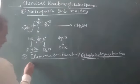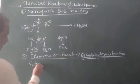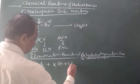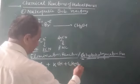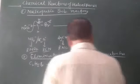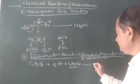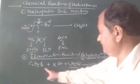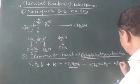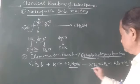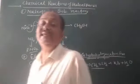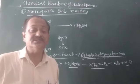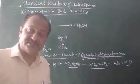When any haloalkane — for example, C2H5Br — is heated in the presence of alcoholic (ethanolic) KOH, there is formation of the corresponding alkene, plus KBr, plus H2O. So corresponding alkenes are obtained, and this is called the dehydrohalogenation reaction.